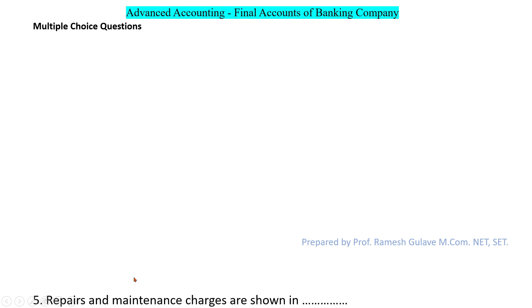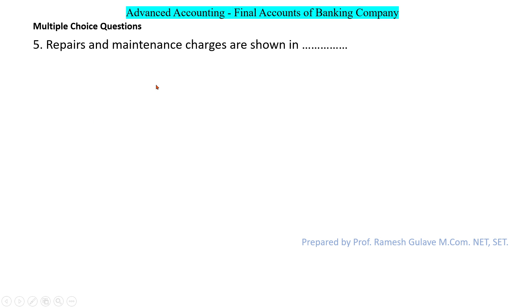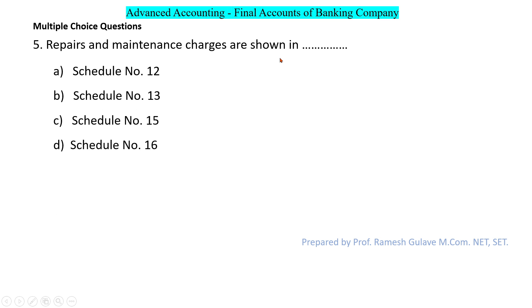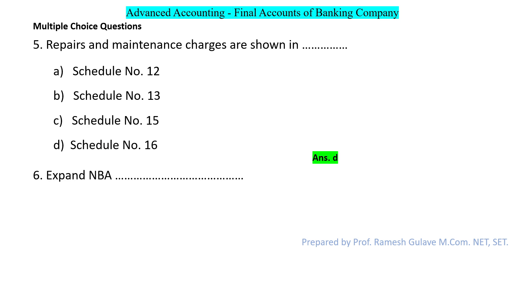The next question says repairs and maintenance charges are shown in which schedule. Repairs and maintenance charges are shown in schedule number 16, so option B is the right answer. The next question asks to expand NBA — we have to give the full form of NBA.